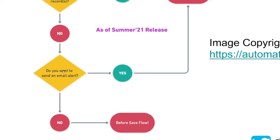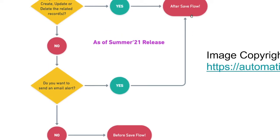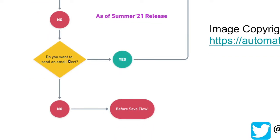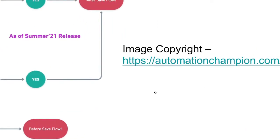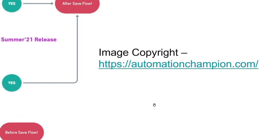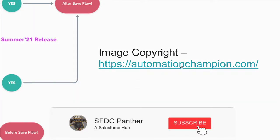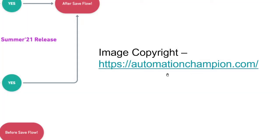If the answer to related record operations is no, then ask: do you want to send an email alert? If yes, use an after-save flow. If that is also no, then use a before-save flow. This decision diagram is from summer '21, which I found on automationchampion.com — the best website for flows, process builders, and Salesforce-related content.